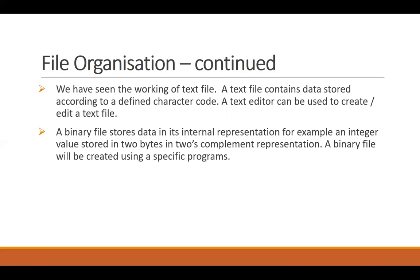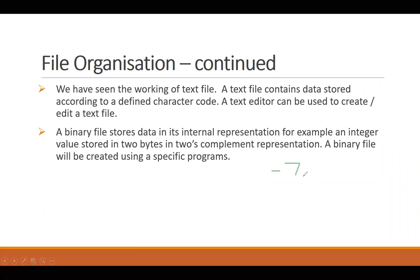A binary file uses its own internal coding to store the data. For example, we studied the calculation of signed values using the two's complement method. When you are storing an integer value into a binary file, you store its two's complement. For example, if I am to store negative seven, the binary of seven would be 0000 0111 in eight bits, and writing that in two's complement would give us the representation of negative seven in binary file format.